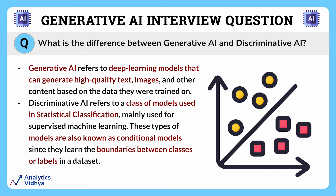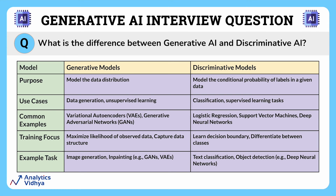That's all about discriminative AI. Let's have a look at how it is different from generative models now. Moving on to the differences — in this particular table, we have documented the key differences between generative models and discriminative models across five categories: purpose, use case, common examples, training focus, and example tasks.